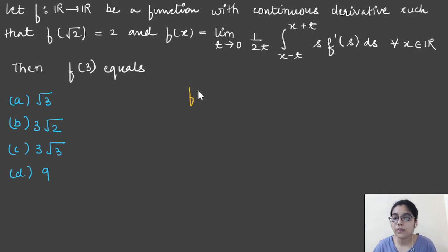If you want the value of f of 3, it means you should have a function f of x, then you will keep x equals 3. But f of x is given in this form. So we will see how we can simplify this expression to get the value of f of x in terms of x only.